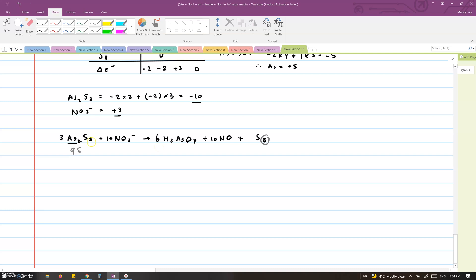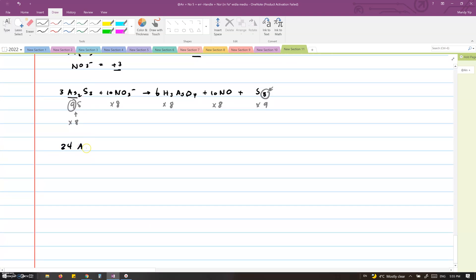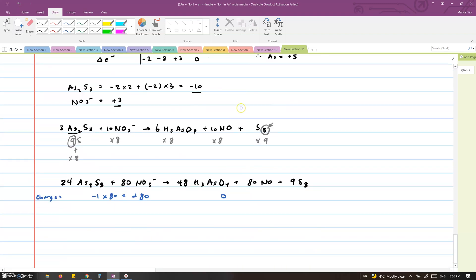Well, what we're going to do is use the same trick that we've done before when we try to balance out the change in the electron count. We will multiply each of the compounds by 8, which is the number of sulfurs on the right side. And then we will multiply S8 by the number of sulfurs on the left side, which is 9. So then we get 24As2S3, 80NO3-, 48H3AsO4, 80NO, and 9S8. And now we can continue balancing the charge, the hydrogens, and oxygens like we normally would.